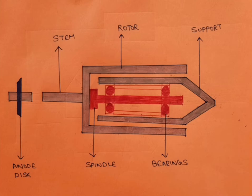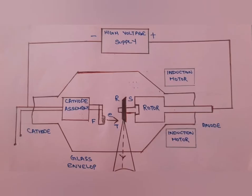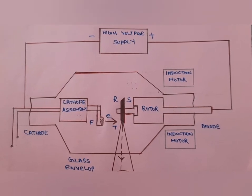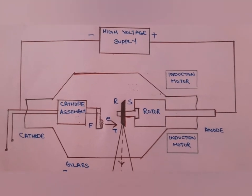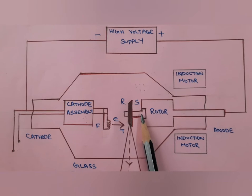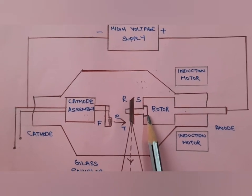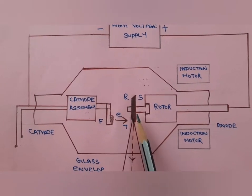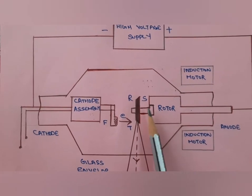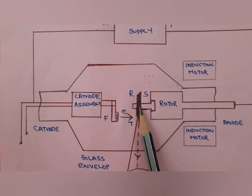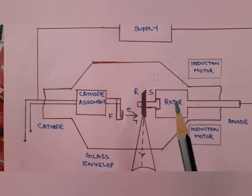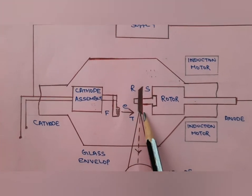Let's discuss in detail how the rotating anode X-ray tube works and how X-rays are produced. In the previous video we learned about the stationary anode X-ray tube, where the anode was stationary. In the rotating anode X-ray tube, you can see an anode disc connected to the rotor using an anode stem. The rotor rotates, thereby causing the anode disc to rotate.